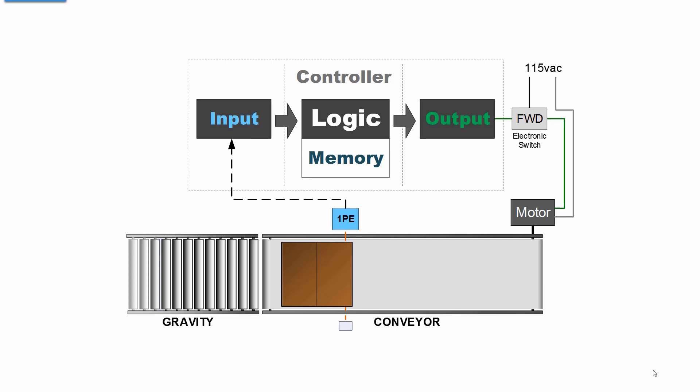The output from the photosensor to the controller is binary. Something is blocking or not blocking. Zero or one. Zero volts or 24 volts DC.